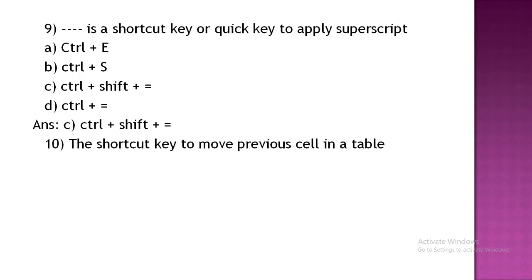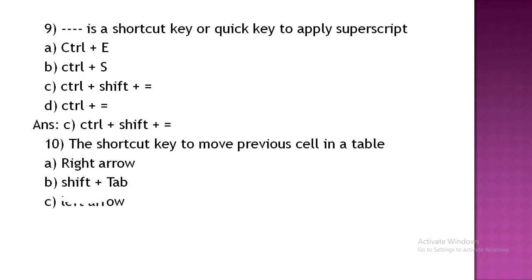The shortcut key to move to the previous cell in a table: Option A: right arrow. Option B: Shift + Tab. Option C: left arrow. Option D: [other]. The correct answer is Option B, Shift + Tab.